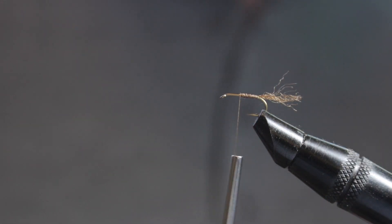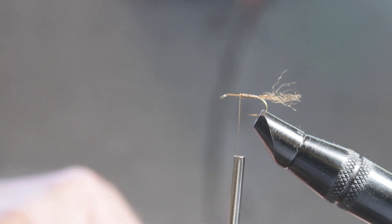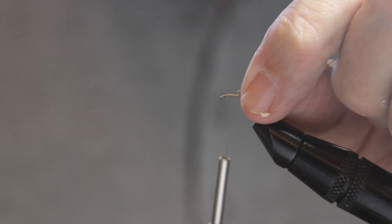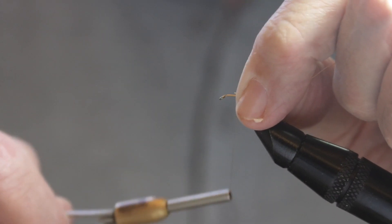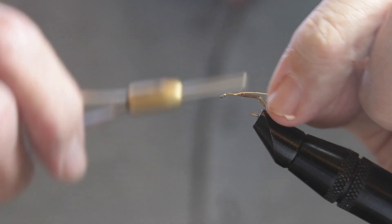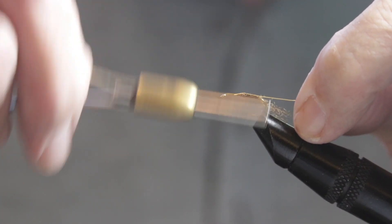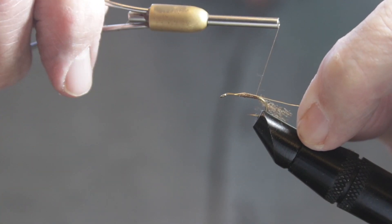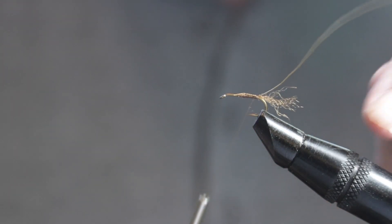After we've cut the shuck thread, we're going to take our next material which is gold wire. It's a fine gold wire. And we're going to tie it in. We're going to try and tie it in so that it's on the far side of the hook for easier wrapping. You could use, if you wanted to, you could probably use some yellow monochord. Anything like that that would work for ribbing. But we like the gold wire. Like the way it shows up.